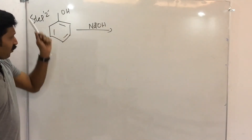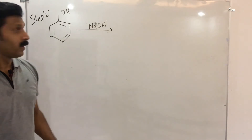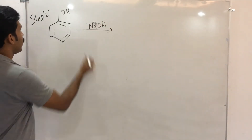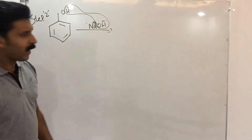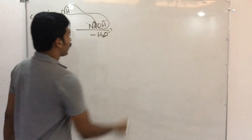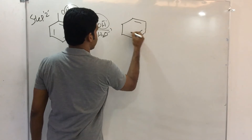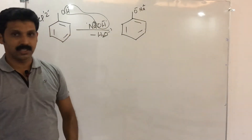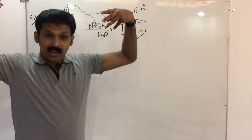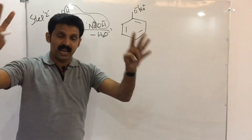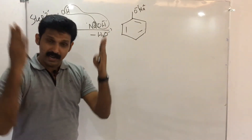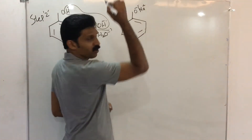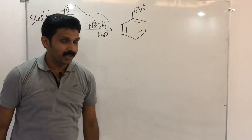In step 2, phenol reacts with NaOH. Phenol is slightly acidic, so it donates H+. The H+ is removed by NaOH, giving H2O and phenoxide ion O minus, which exists as sodium phenoxide — O minus with Na plus. This is an ionic bond. In water, it dissolves and exists as free phenoxide ion O minus and free Na plus ions, with free movement in solution.